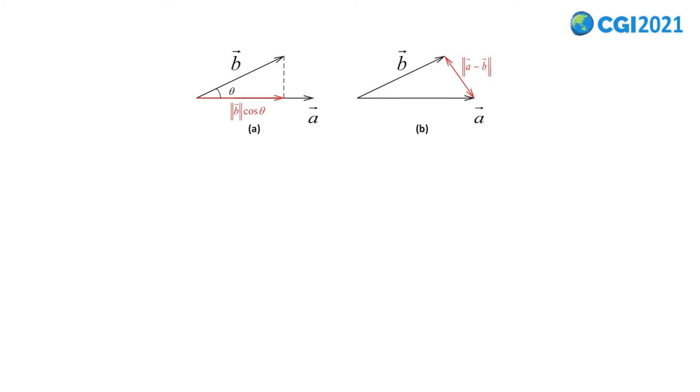As mentioned in the previous slide, the inner product of vectors can reflect the similarity of them. As shown in figure A, projection of b on a multiplied by the length of a equals inner product, and the angle between a and b is theta. When theta is an acute angle, the inner product will be positive.